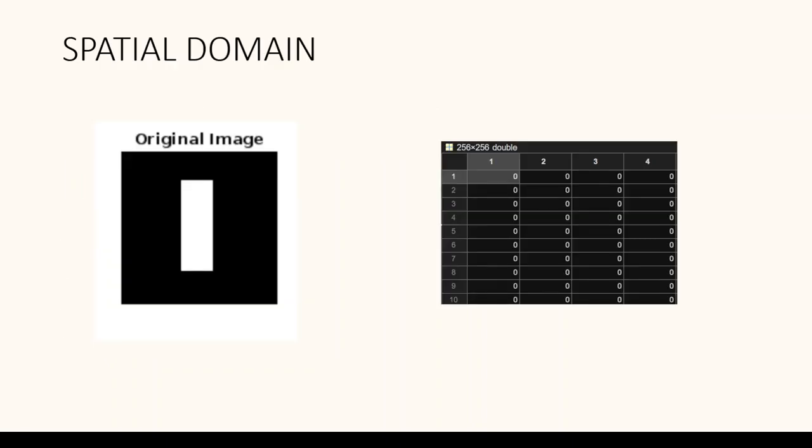In spatial domain, an image is initially represented in spatial domain and is composed of discrete pixels with specific intensity values. Each pixel represents a sample of the image intensity at a particular spatial location.